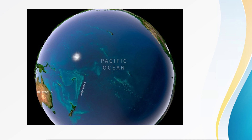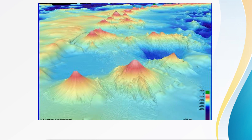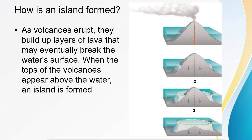As we continue to learn about the Pacific region, these are some of the pictures I want to share with all of you, so we can be able to imagine what is under the ocean. This is a beautiful picture that shows we have so many mountains under the sea. One of the big questions we often ask is: how is an island formed? We have been talking about volcanoes recently, and we know that many of these islands are formed because of these volcanoes. When they erupt, they build up layers of lava that may eventually break the water surface. When the tops of the volcanoes appear above the water, an island is formed, and that is what you can see in the picture here on the right.